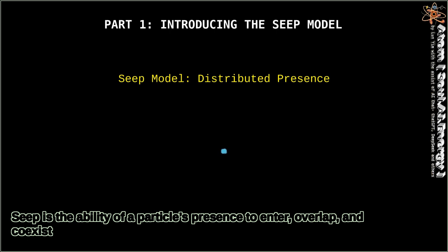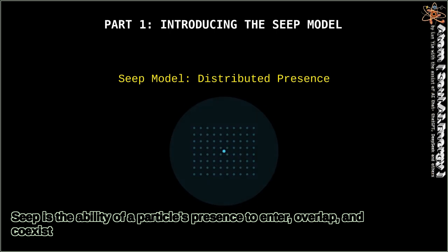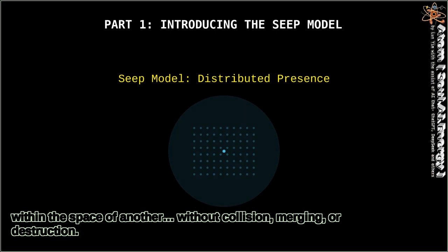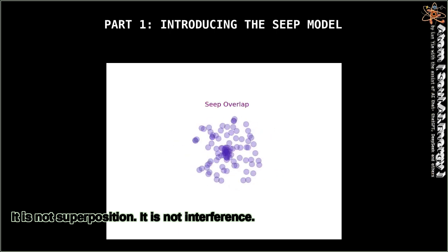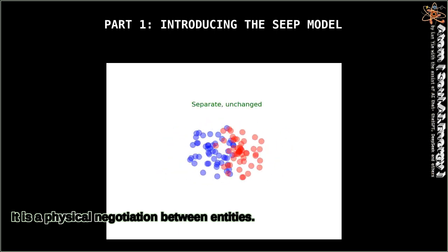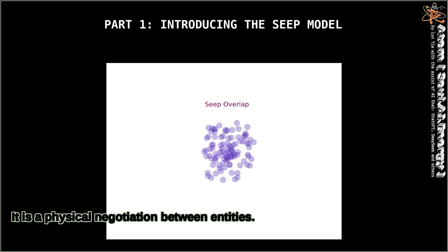Seep is the ability of a particle's presence to enter, overlap, and coexist within the space of another without collision, merging, or destruction. It is not superposition. It is not interference. It is a physical negotiation between entities.